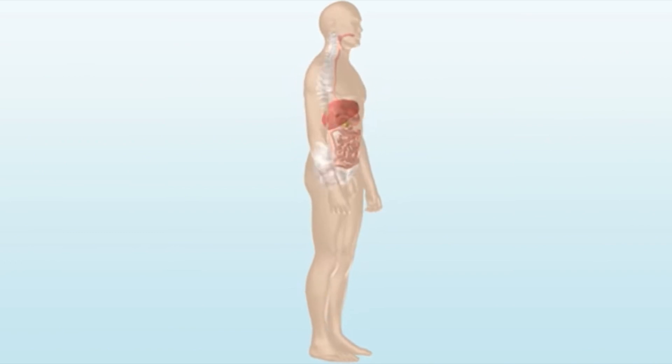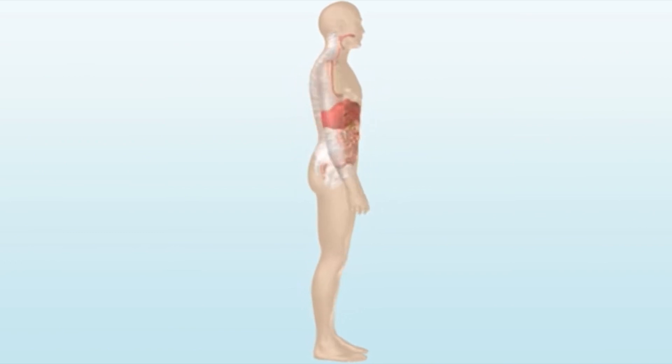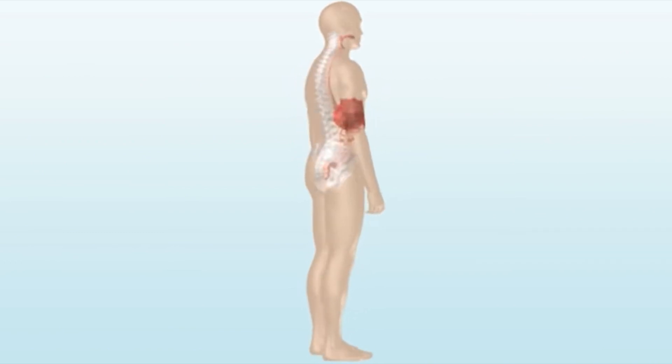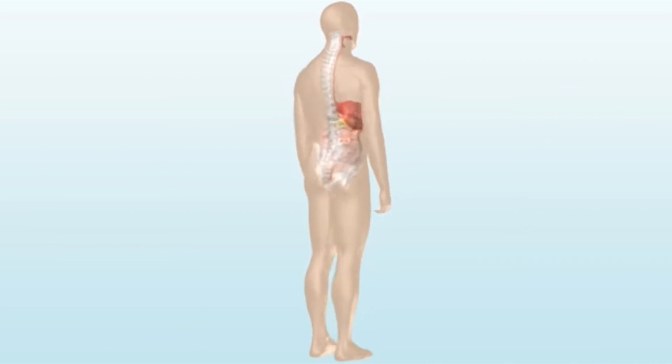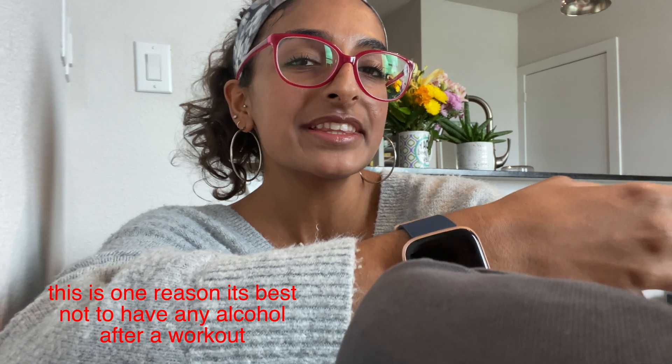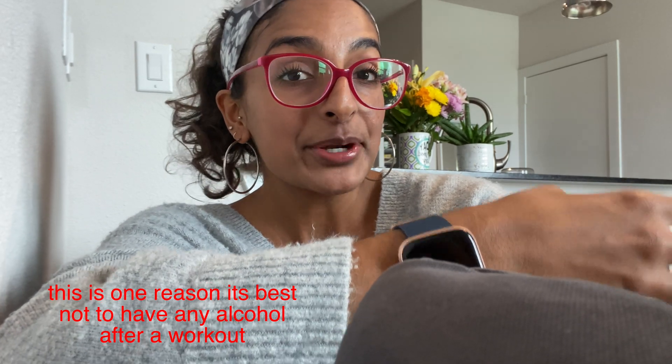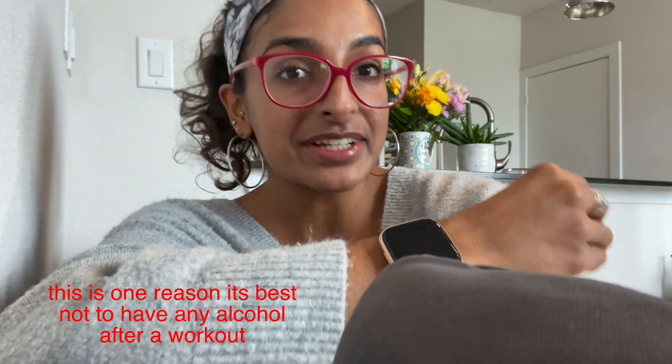Did you know that your body sees alcohol as a toxin? It wants to prioritize getting rid of it over anything else. So when you drink alcohol, a lot of things are put on the back burner — like fat burning and calorie burning — because the most important thing for your body is to get rid of that alcohol. Now that we know the basics of how alcohol is metabolized, let's look at some of the long-term effects.